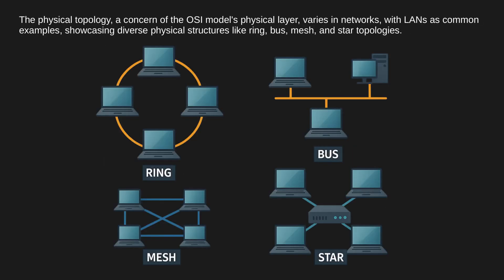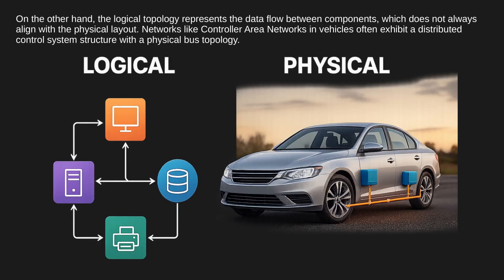The physical topology, a concern of the OSI model's physical layer, varies in networks with LANs as common examples, showcasing diverse physical structures like ring, bus, mesh, and star topologies. The logical topology, on the other hand, represents the data flow between components, which does not always align with the physical layout.